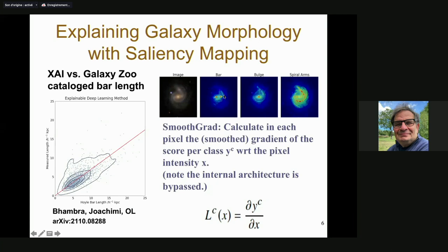The nice thing is, if you do it with respect to a bar, you really see a bar — most of the time, with some deviations — bulge, spiral arms, and so on. What Prabh has done is not only identify the bar, but also plot the size of the bar on that heat map and compare it with the bar as measured by humans. You see a very tight correlation — correlation coefficient of about 0.76. I think it's a nice step of what we'll hopefully see in the future: actually understanding what's happening in classification. Through these heat maps it's also a way to measure parameters more objectively. In this technique, we actually bypass all the complicated internal architecture of the network.